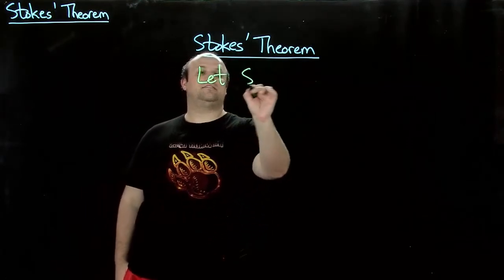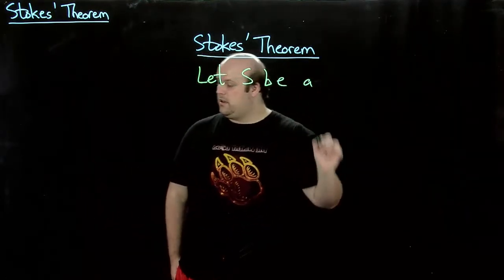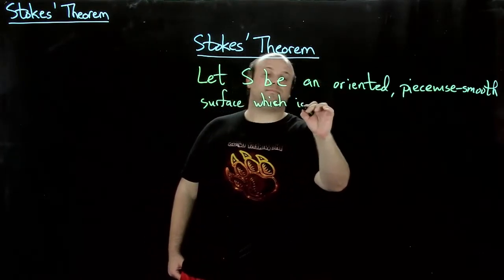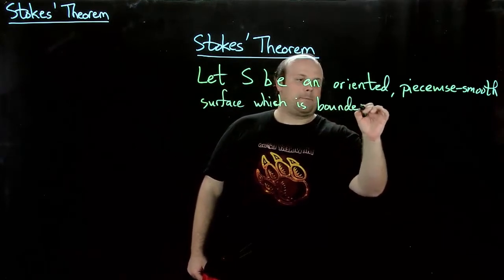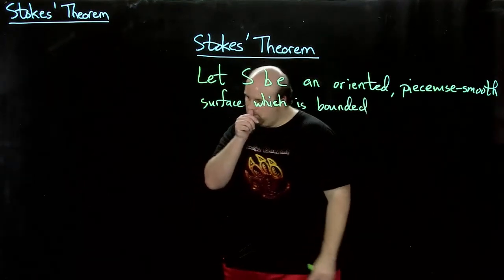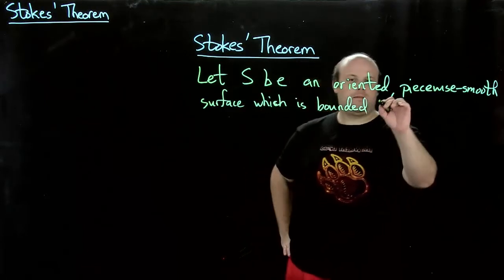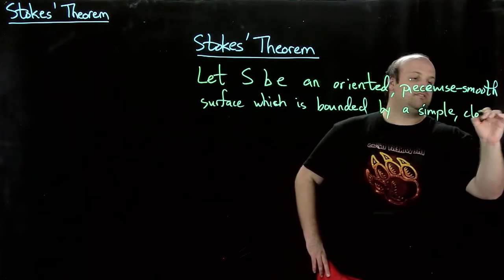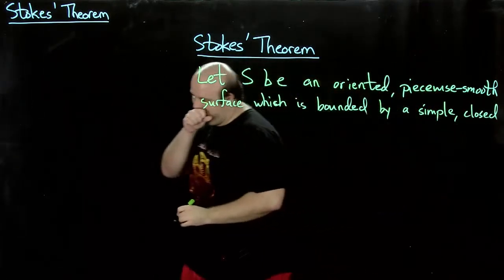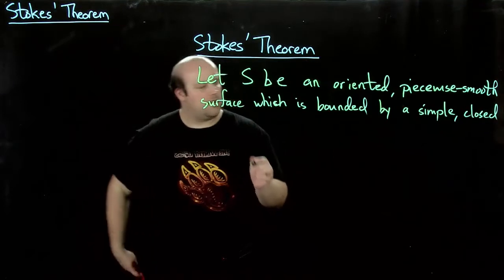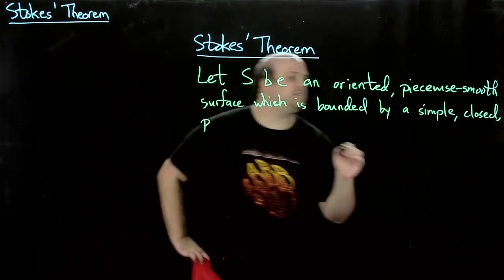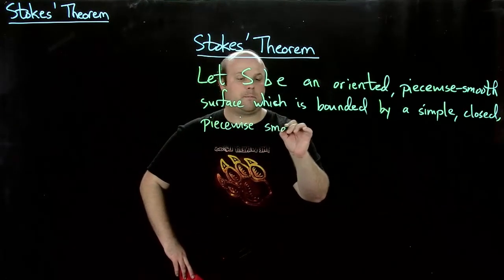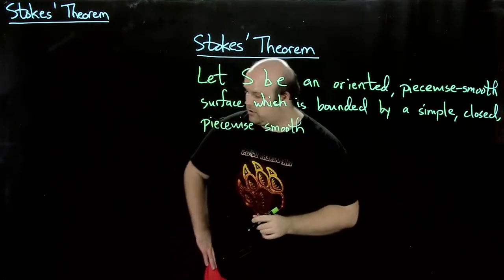Alright, so let S be an oriented piecewise-smooth surface which is bounded by a simple, closed, piecewise smooth curve C.